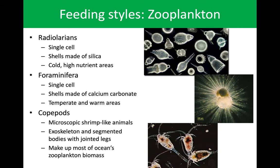A couple more. Radiolarians are single-celled with silica shells. These are kind of cool because they end up looking like Christmas ornaments — essentially glass shells. You find these in cold, high-nutrient areas, more towards the poles. We find a handful of them here as well, however not as abundant as the diatoms and dinoflagellates we talked about in the previous slides.